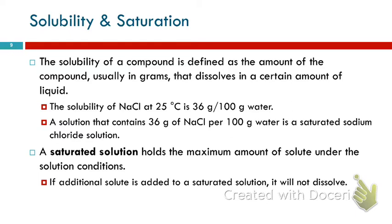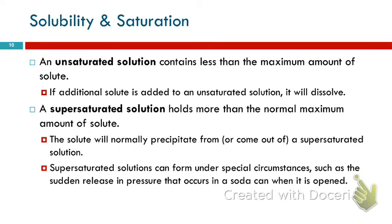A saturated solution is like a saturated sponge — if you put more water on it, it just runs out the bottom. It's full, it can't take anymore. A saturated solution is at the solubility limit for that temperature; it has the maximum amount. If you add more sodium chloride to a saturated solution, it will just fall to the bottom like sand and not dissolve. If a solution is unsaturated, that means you could put more in — it hasn't reached the solubility limit. For sodium chloride, 20 grams in 100 grams of water would be an unsaturated solution; if you add more, it will dissolve.